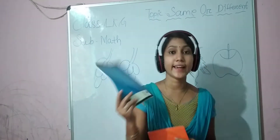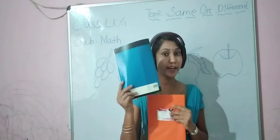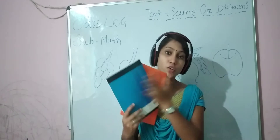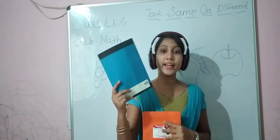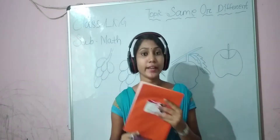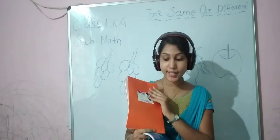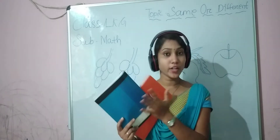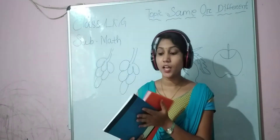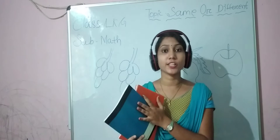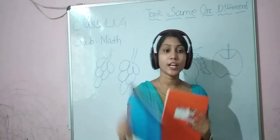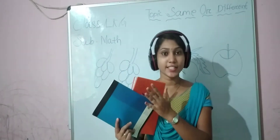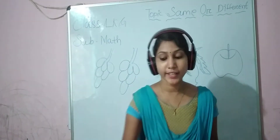Look at this one. What is this? This is also a notebook. What color is this one? Blue color. And this one? Orange color. One is blue color and one is orange color. The colors are different, so these are different.